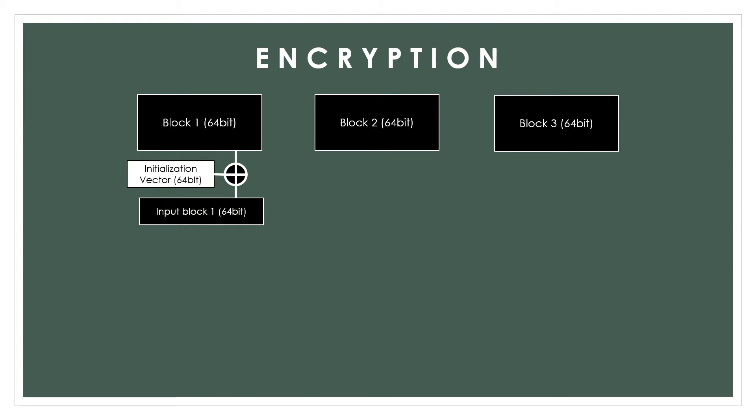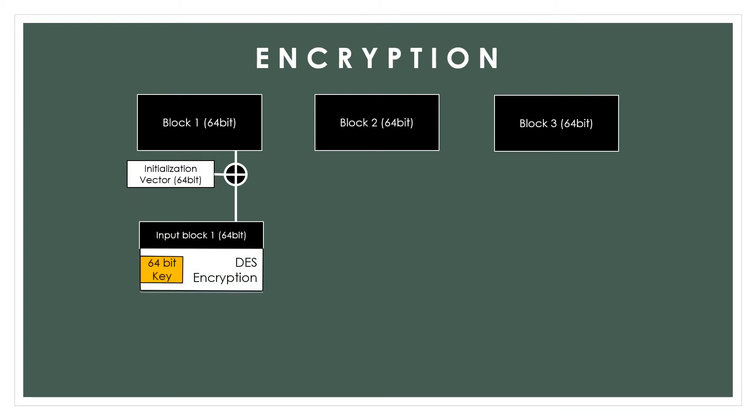The first block of plain text is XORed with an initialization vector (IV) of a certain length. The length depends on the type of encryption chosen, similar to the size of the plain text blocks, so in this example it will be 64 bits. IV is used because the previous block does not exist. The IV is not secret, but it is advisable for it to be unpredictable.